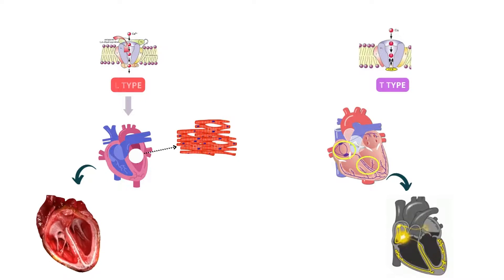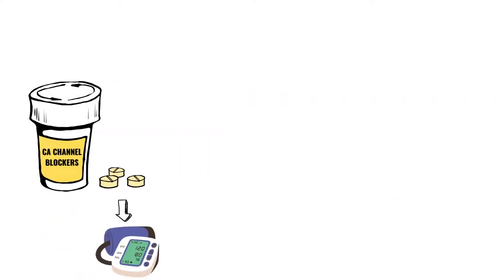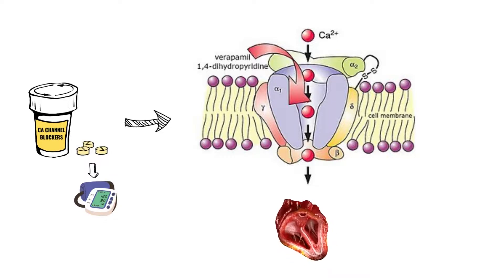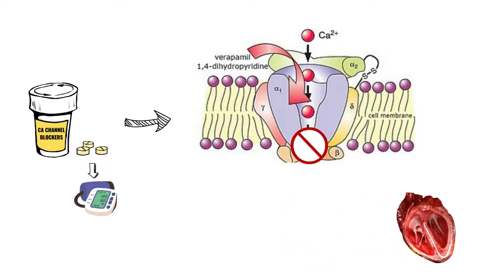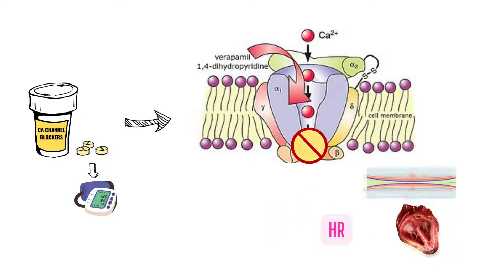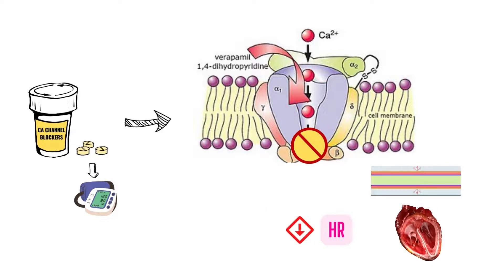Calcium channel blockers are drugs that are used to reduce blood pressure. They work by blocking calcium from entering the cells of the heart and arteries. The heart and arteries contract harder when calcium is present. Calcium channel blockers prevent calcium from entering cells, allowing blood vessels to relax and widen. Some calcium channel blockers can also lower blood pressure by slowing heart rate.